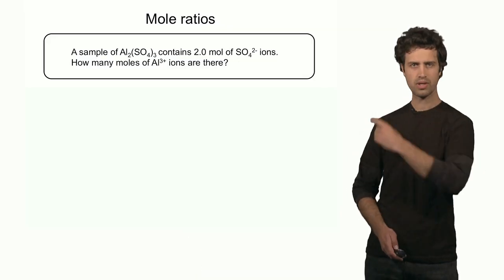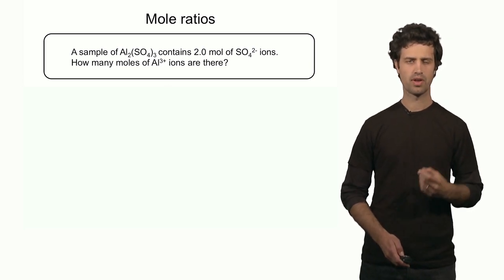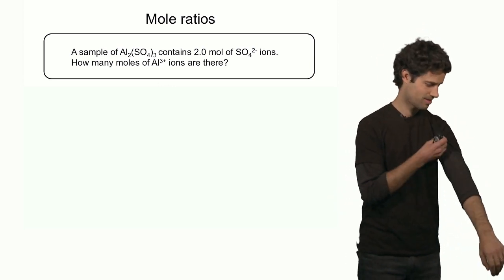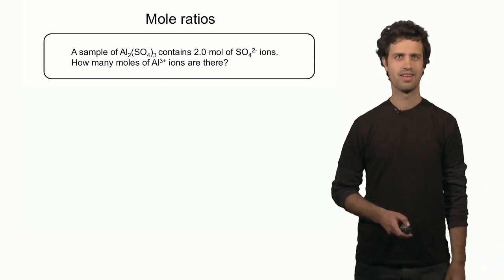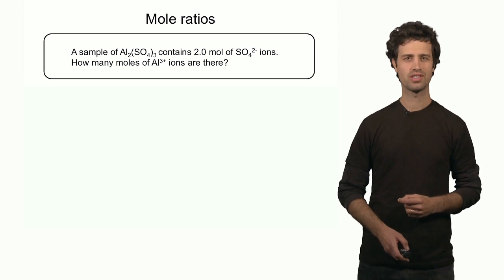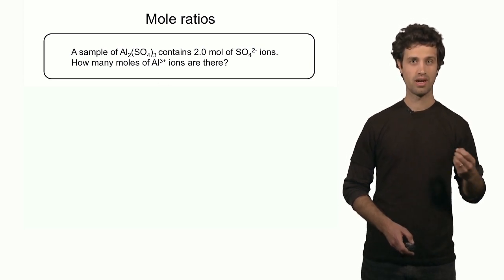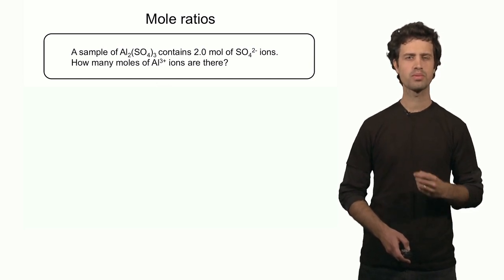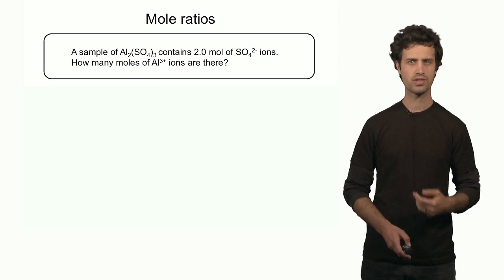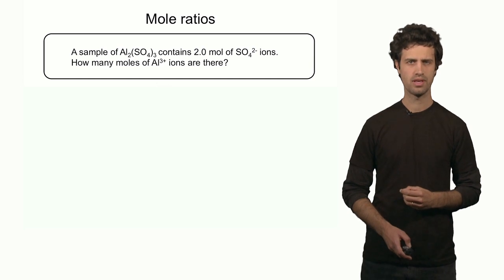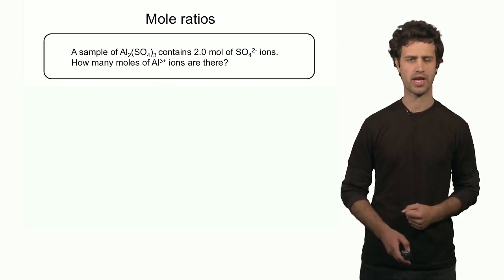These types of calculations also apply to molecules and atoms. Let's look at an example. Here we have a sample of aluminum sulfate, an ionic compound. It contains aluminum ions and sulfate ions. Now, given that we have 2.0 moles of sulfate ions, can I determine how many moles of aluminum ions I have?